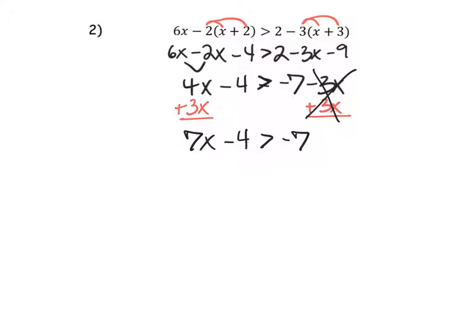Now the minus 4. Add 4 to both sides. The fours are gone. Negative 7 plus 4 is negative 3. We're going to get a fraction answer, but that's okay. Divide by 7 both sides. x is greater than negative 3/7.